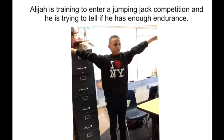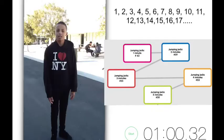Elijah is training to enter a jumping jack competition and he is trying to tell if he has enough endurance. First, we made a plan and decided that we were going to time Elijah doing jumping jacks for 5 minutes. Then, we looked up a timer on the iPad and went outside. Finally, we counted how many jumping jacks Elijah did in the increments of time.